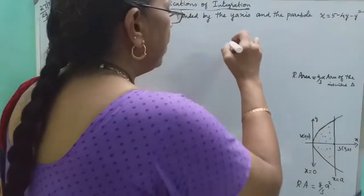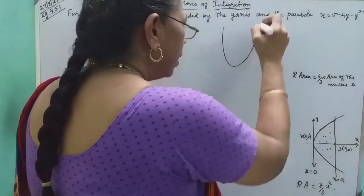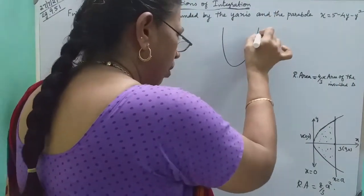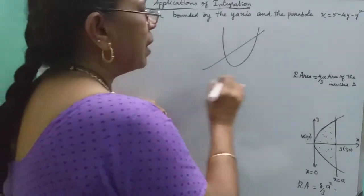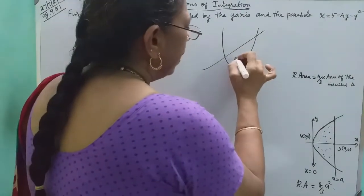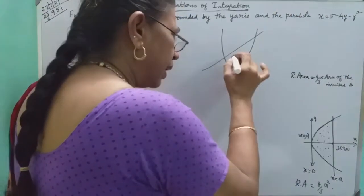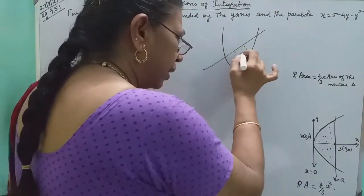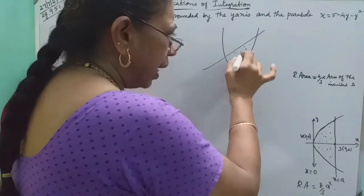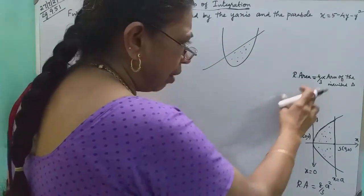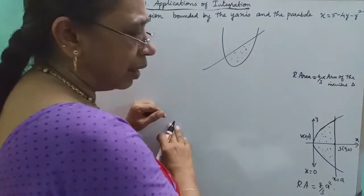If you see the area bounded by the y-axis, you will see the result of Archimedes, which gives 4 by 3. We will show you two areas — the area inscribed within the triangle as well.